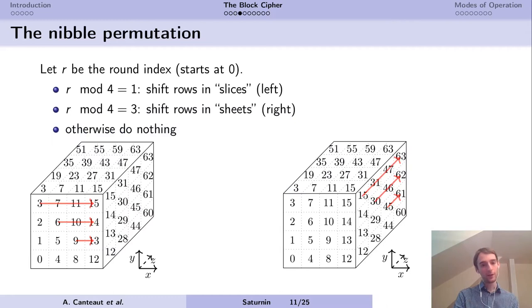The nibble permutation depends on the round index, which starts at 0. If the round index is 1 modulo 4, then we shift rows in the slices of the cube. If the round index is 3 modulo 4, we shift rows in the sheets of the cube, like in the AES. If R is 0 or 2 modulo 4, we do nothing. So these shift row operations are only going to intervene every two rounds.